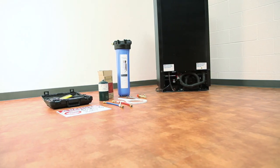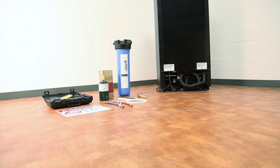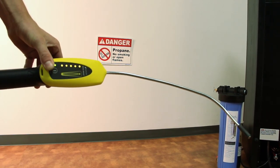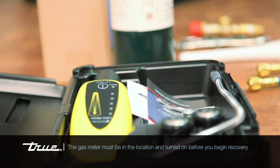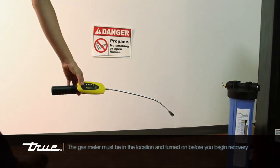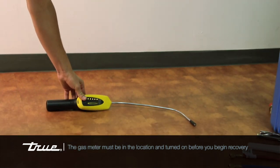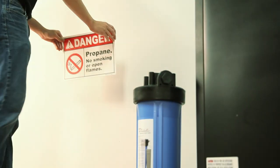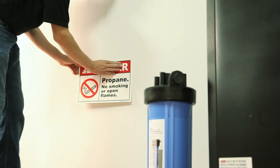The recovery process or any refrigeration-related repair should start by turning on your gas meter or leak detector. This tool is also part of the HC Toolkit and should remain on until the repair is completed. The safety placard needs to be in a location where the recovery or repair is taking place.